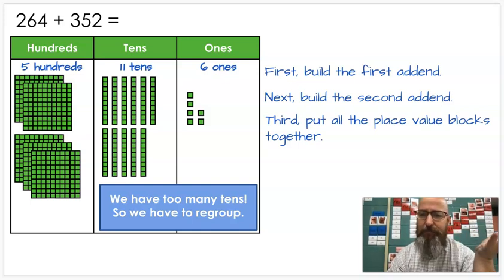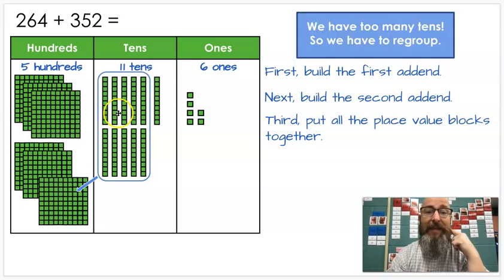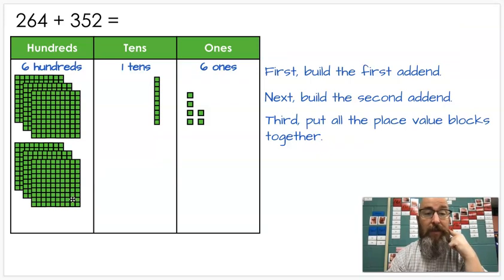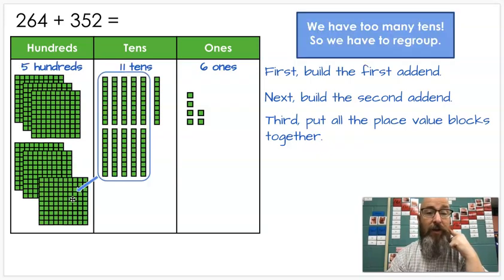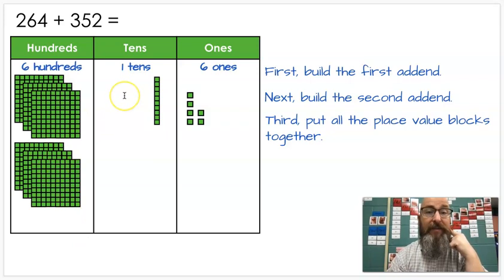Now remember how many tens make a hundred? Ten, that's right. So we're going to take these ten. One, two, three, four, five, six, seven, eight, nine, ten. We're going to regroup. We're going to turn these ten into a hundred. So I slid my little extra hundred down here. And of course, in my next slide, you're going to see those tens go away because I've moved them over here. So now, instead of five hundreds, I have six hundreds. Instead of eleven tens, I have one because I moved it over here. I still have my six ones. That didn't change. I didn't have to change that.